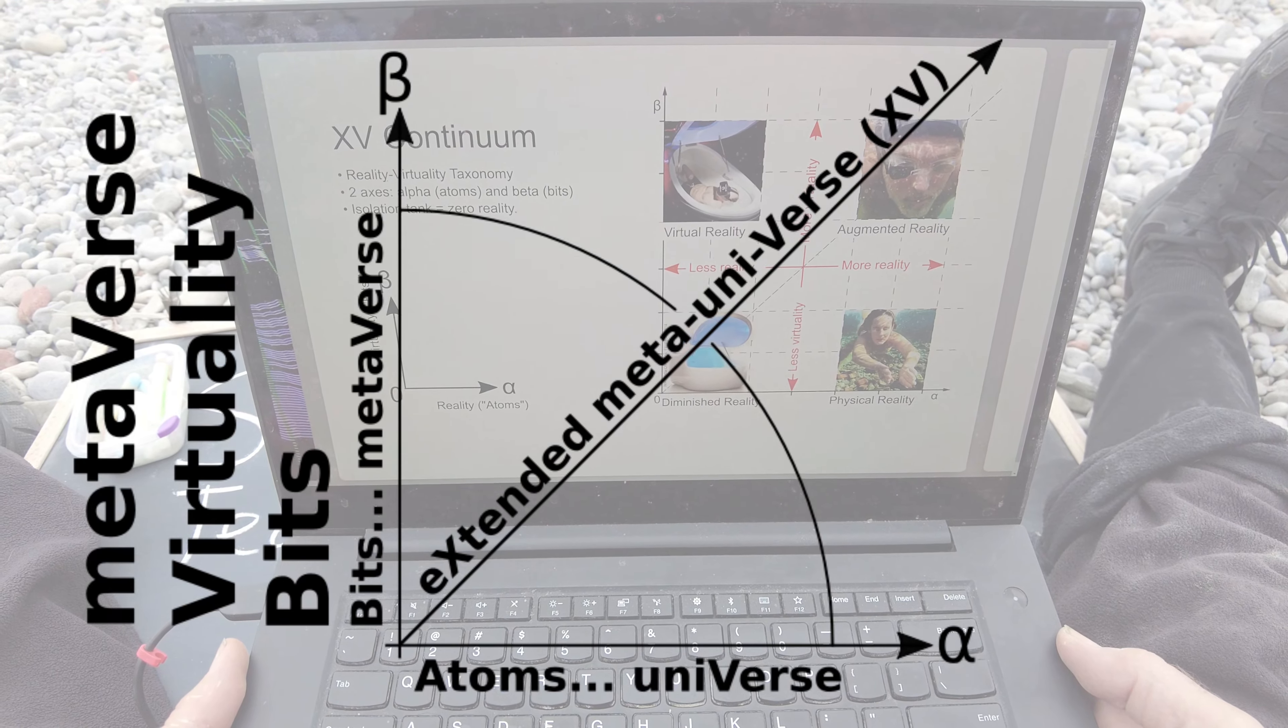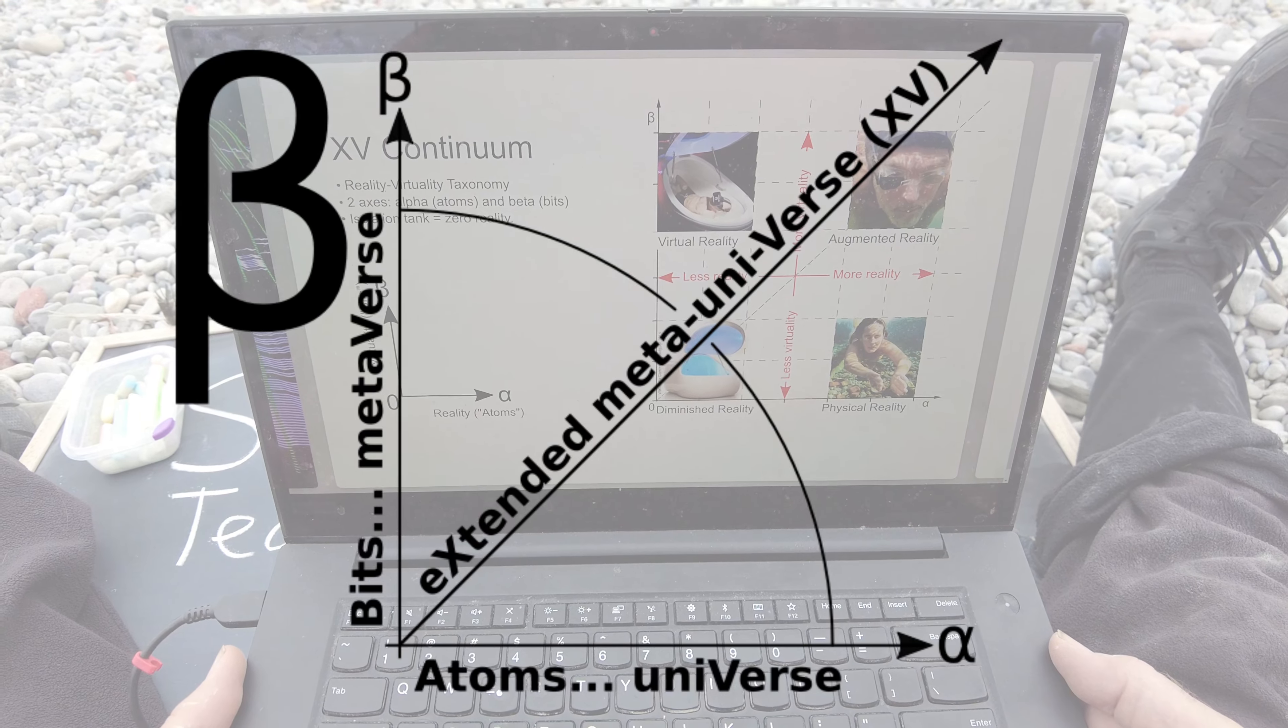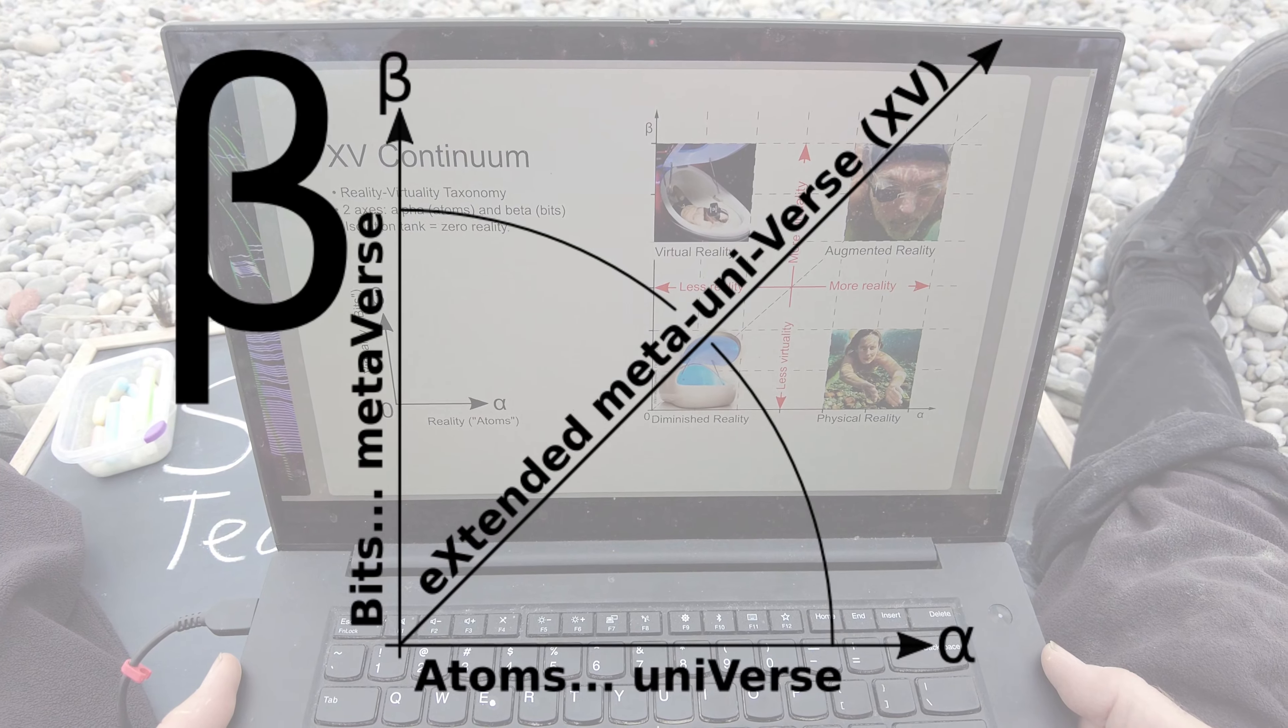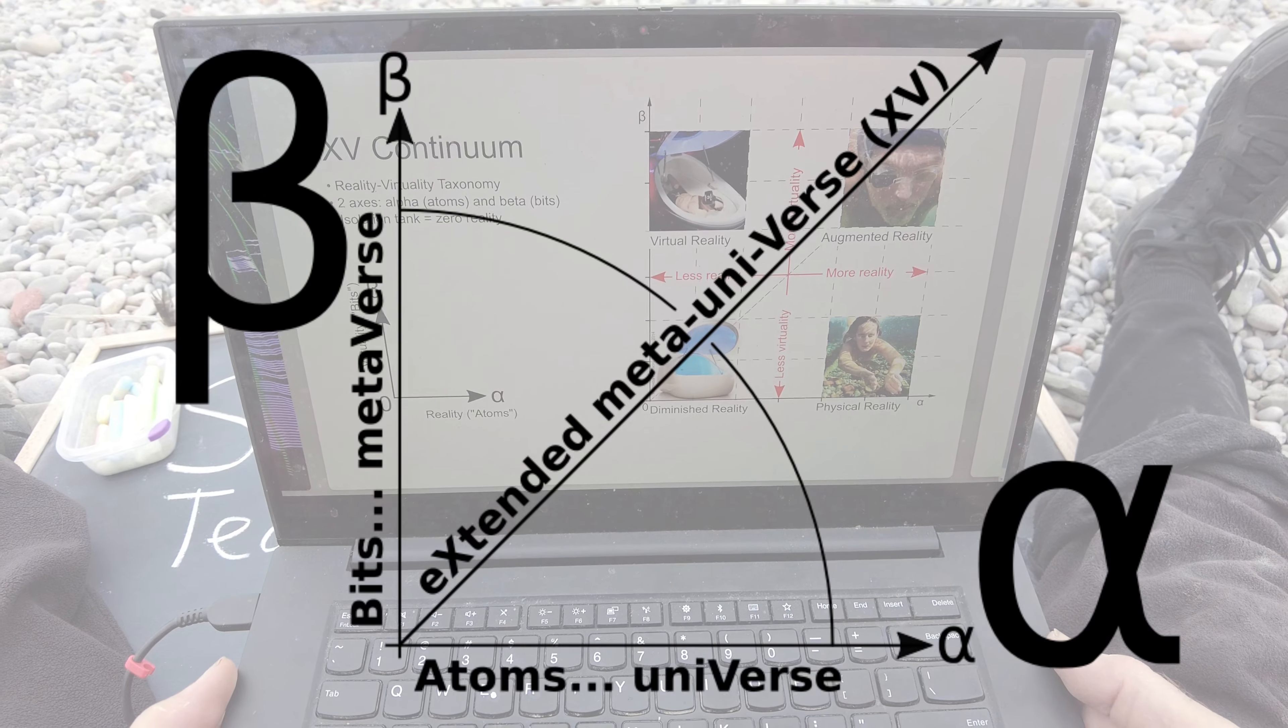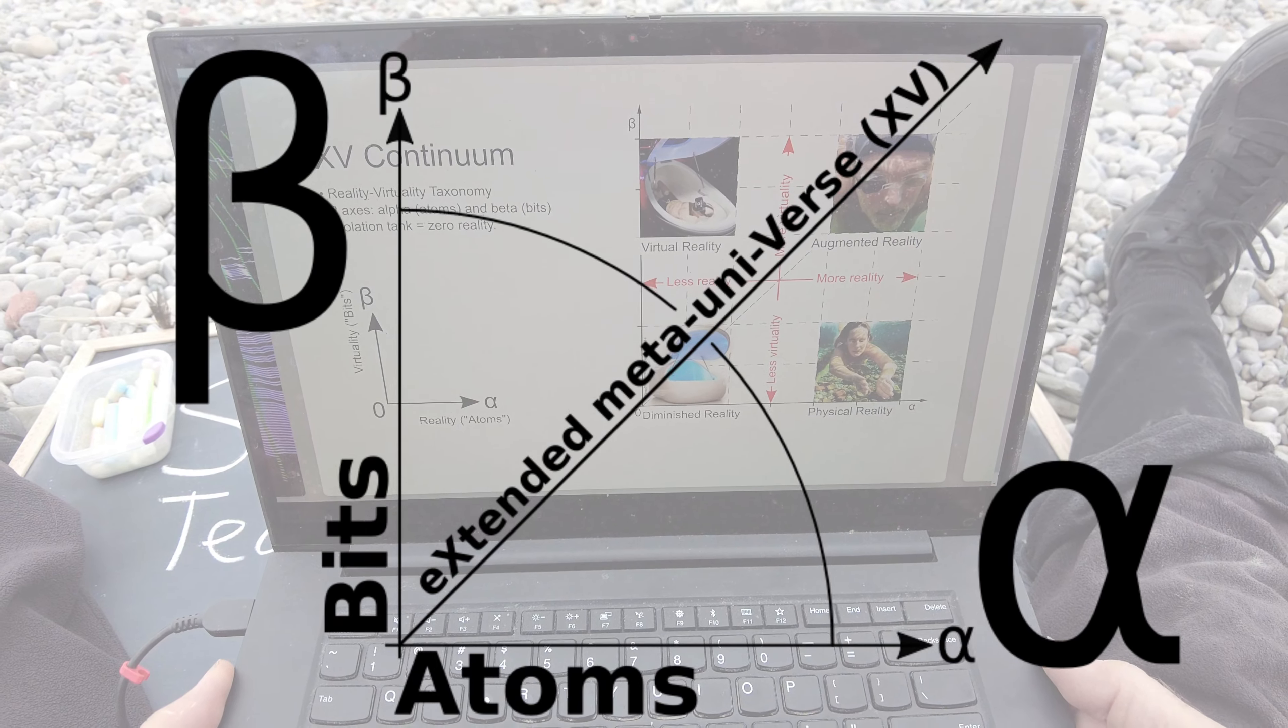And the axis going from bottom to top is the bits axis, the virtuality axis. The virtual world is made of bits, so we use the Greek letter beta, the second letter of the Greek alphabet to represent the bits. So the axes are alpha and beta, the first two letters of the Greek alphabet.